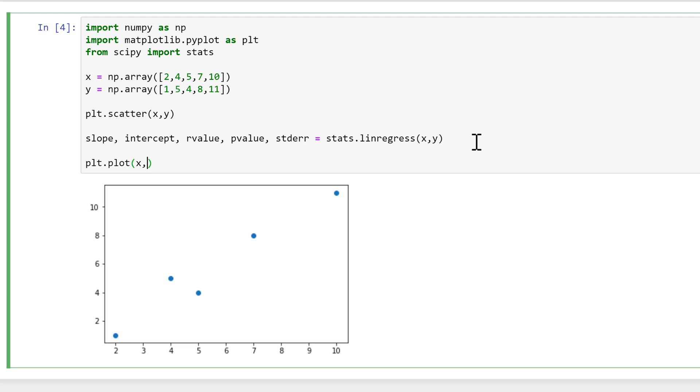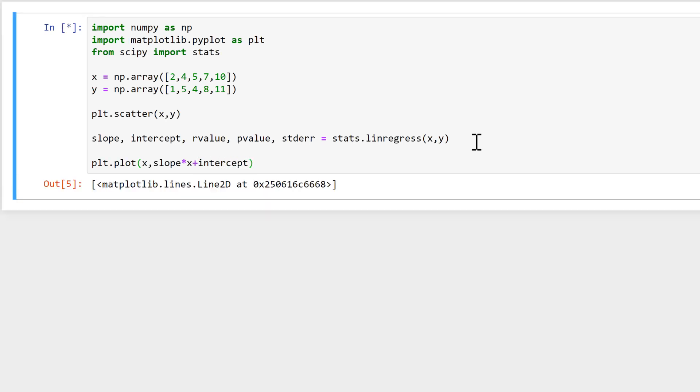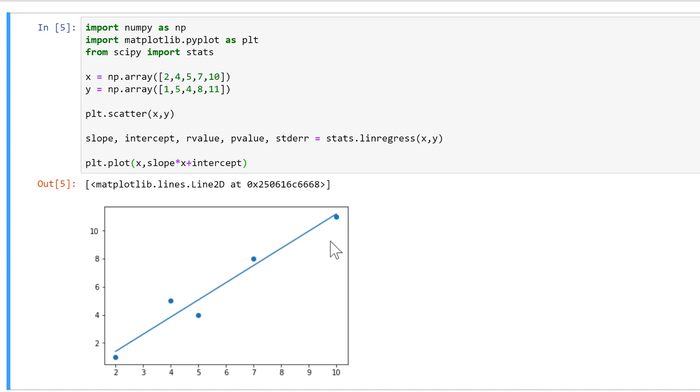y values need to be y equals mx plus c. So m is the slope, so we'll change this to the slope, and that needs to be multiplied by the x values, and then we'll add on c, which is the intercept. And then we get the line of best fit.